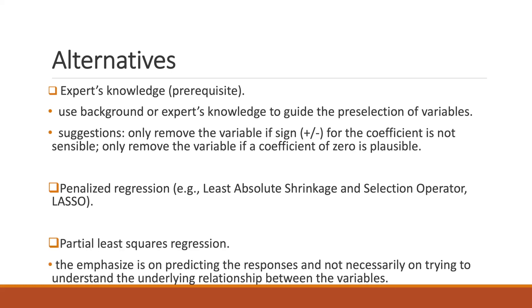Another alternative could be partial least squares regression. This method is useful when you have predictors that are highly linearly correlated. It is also an efficient data reduction technique when you have too many predictors. However, I should note that the method emphasizes developing predictive models or predicting the responses, and it does not necessarily emphasize trying to understand the underlying relationship between the variables.